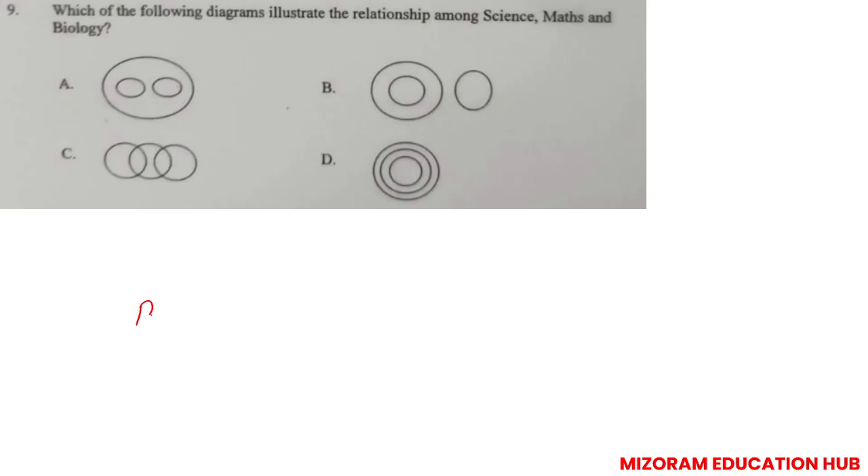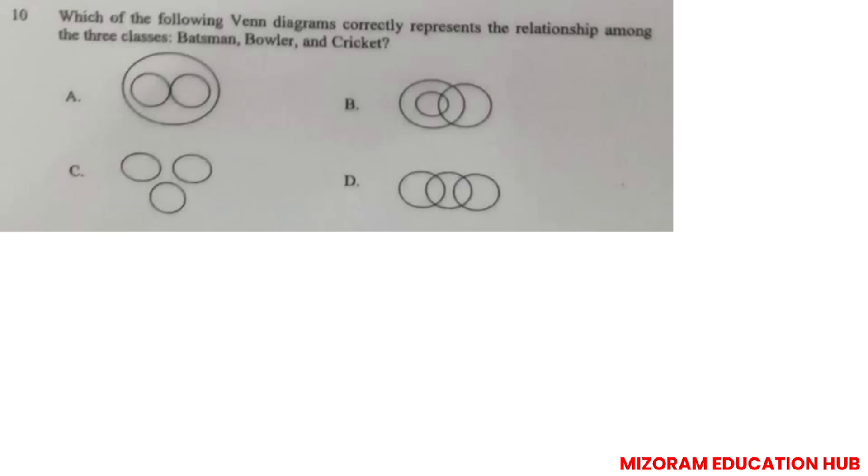Next question: Venn diagram and relation among science, mathematics, and biology. Biology is a branch of science. Mathematics is different. So option B is correct answer. Next question: Which of the following Venn diagrams correctly represents the relationship among the three classes - batsman, bowler, cricket? Cricket is a sport, and within cricket there are batsmen and bowlers. But some batsmen can be bowlers.